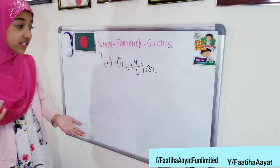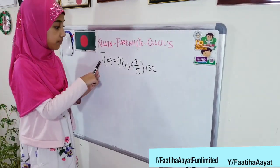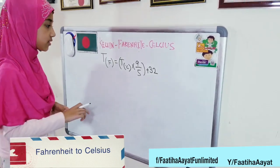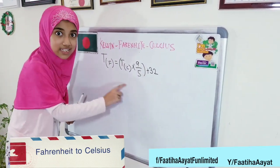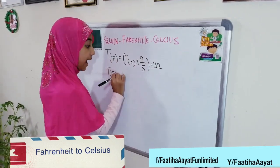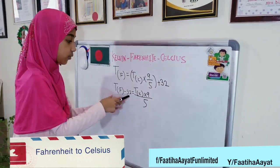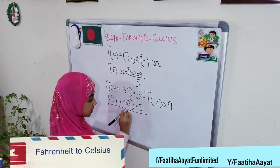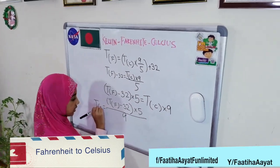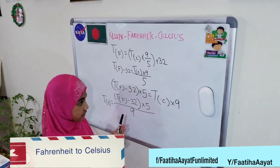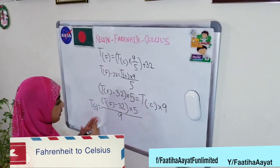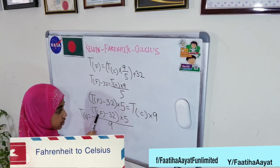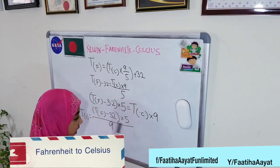But what if we want to convert the Fahrenheit to Celsius? We're going to find that out by solving this equation. The formula is: temperature measured in degrees Celsius is equal to temperature measured in degrees Fahrenheit, minus 32, times 5, divided by 9.